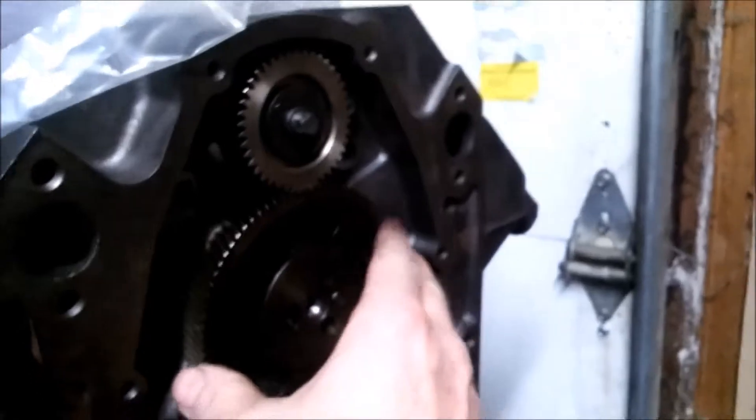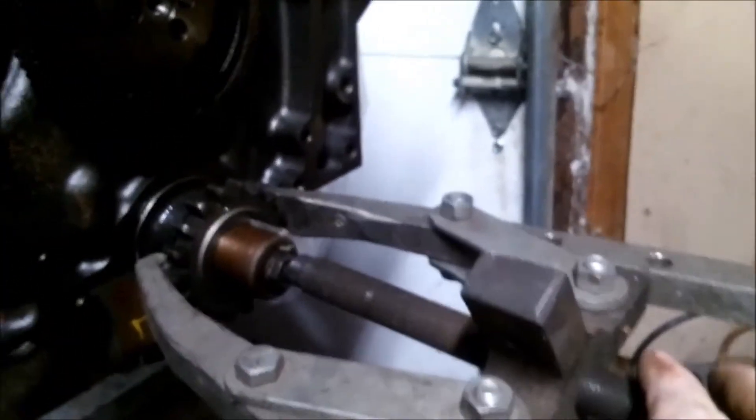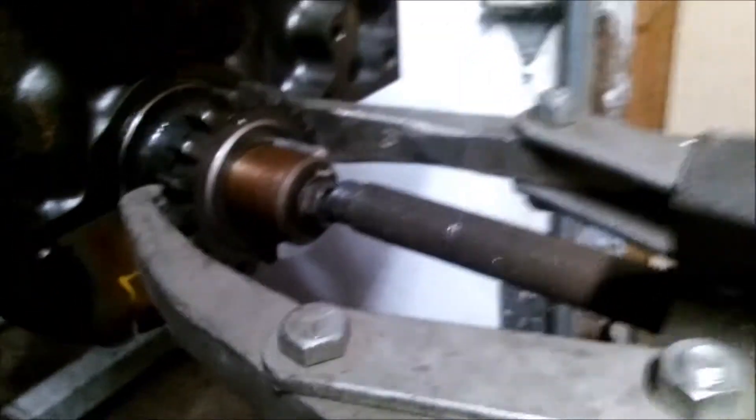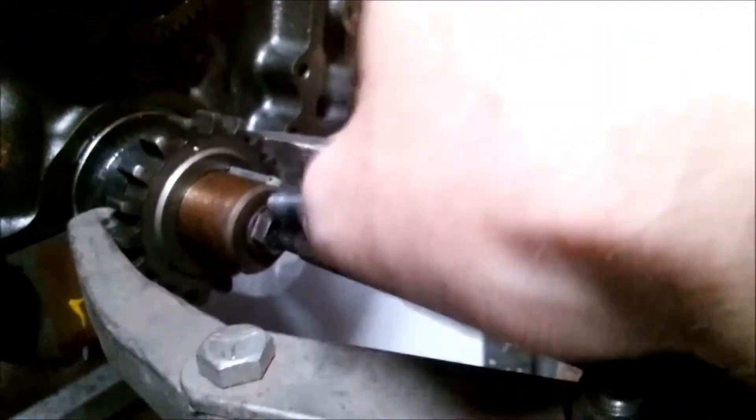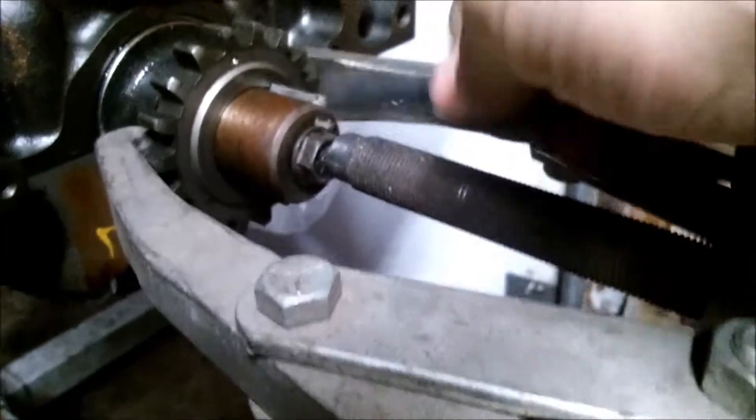I took my two jaw puller, you could use a three jaw. Got it behind here, put a bolt. The original bolt is a lot longer, so I actually used one for the flywheel since it's fine thread. Stuck it all the way in there so you don't screw the threads up.